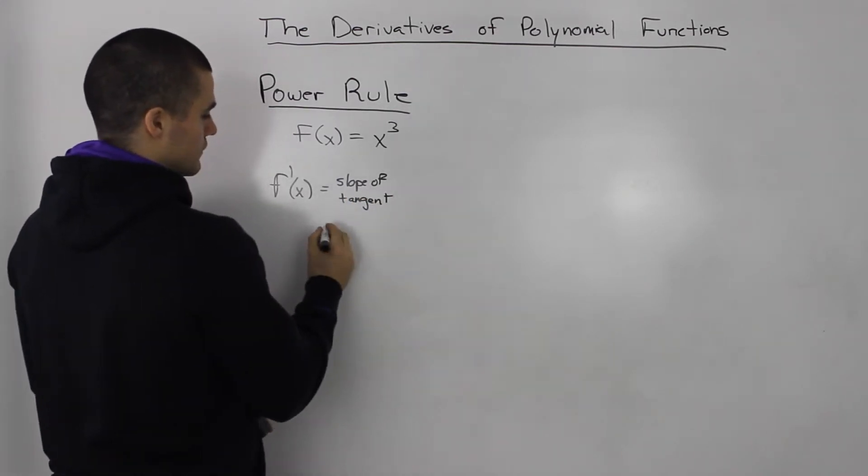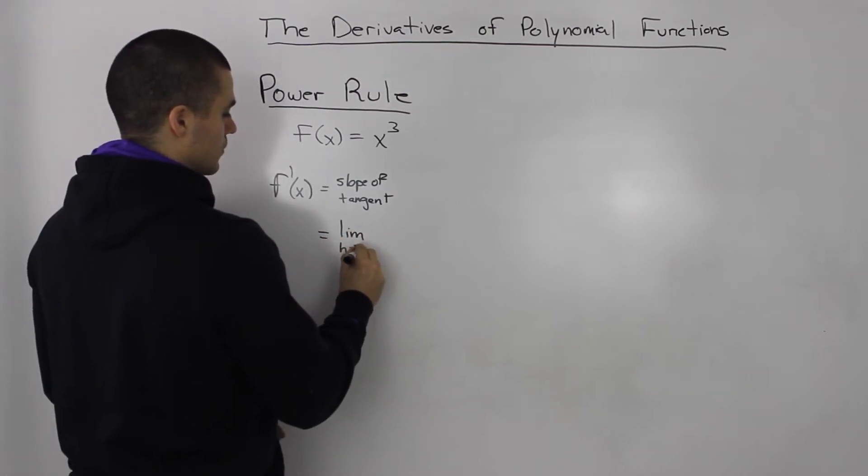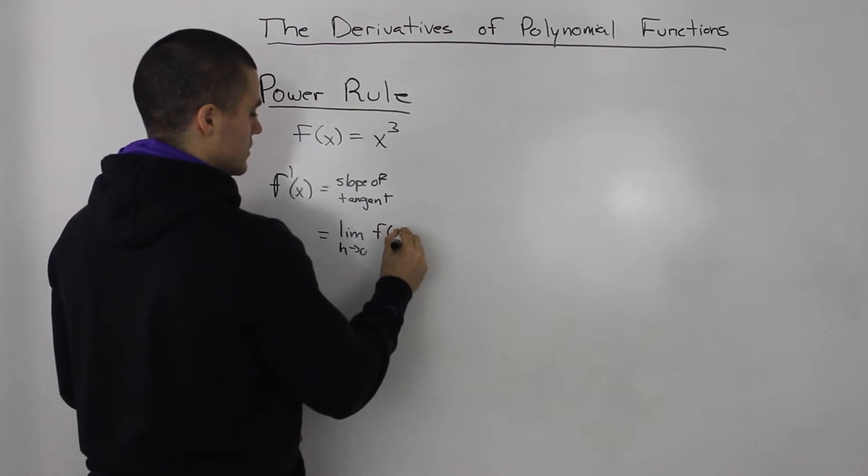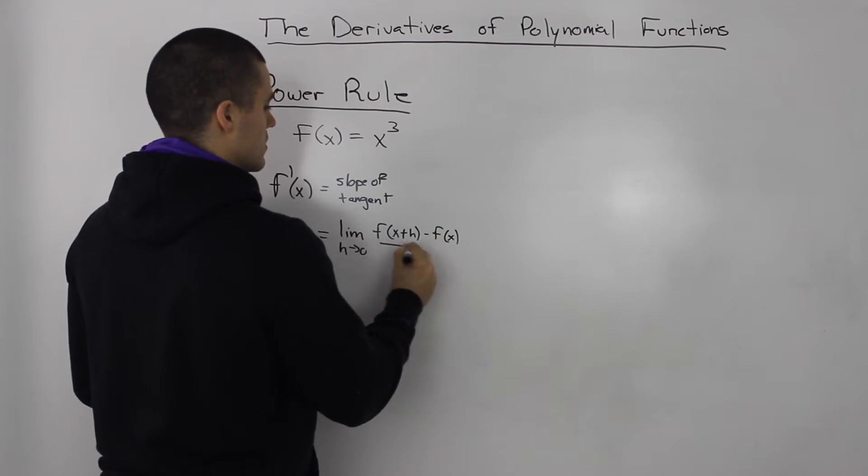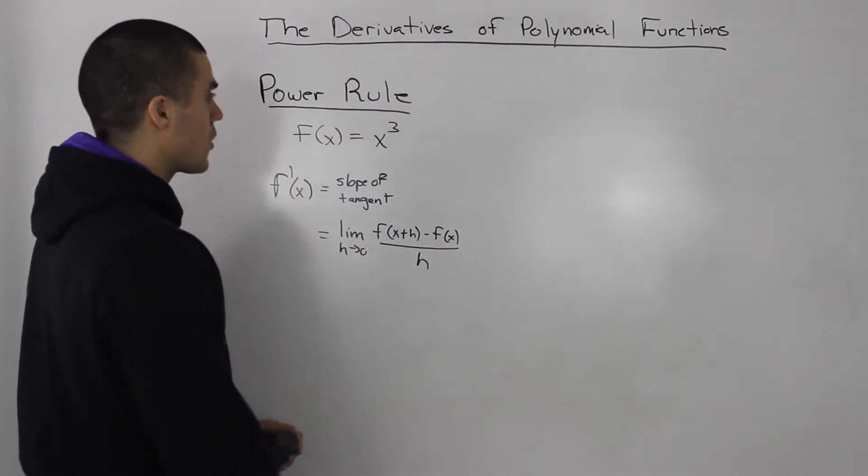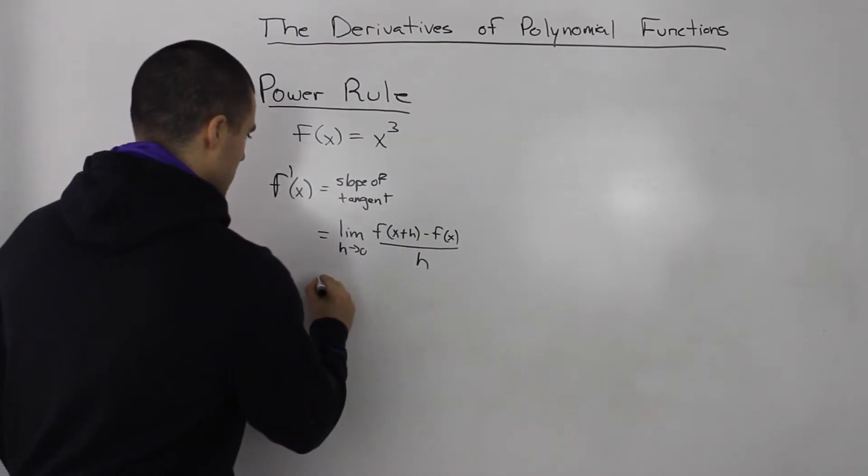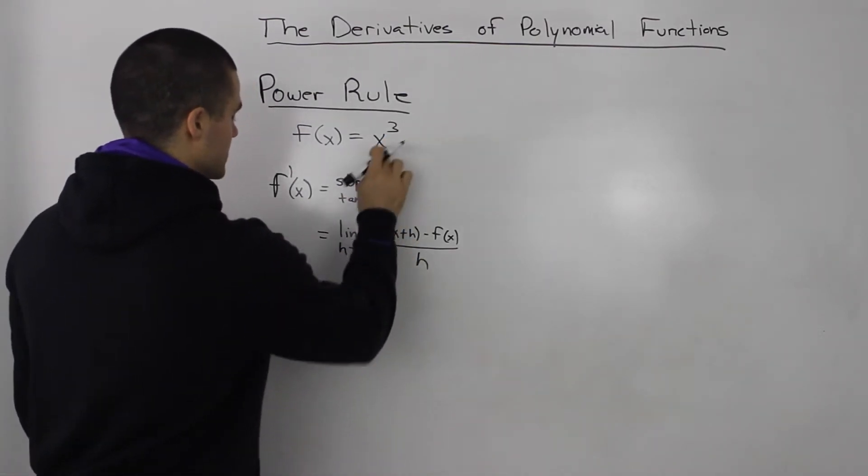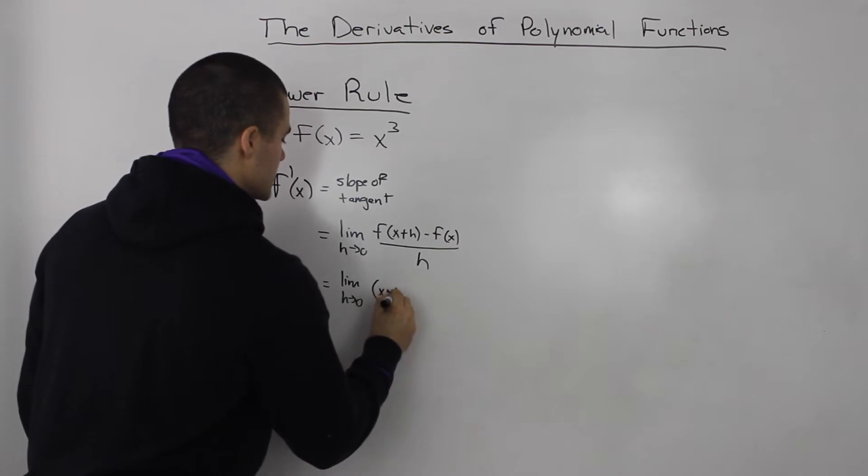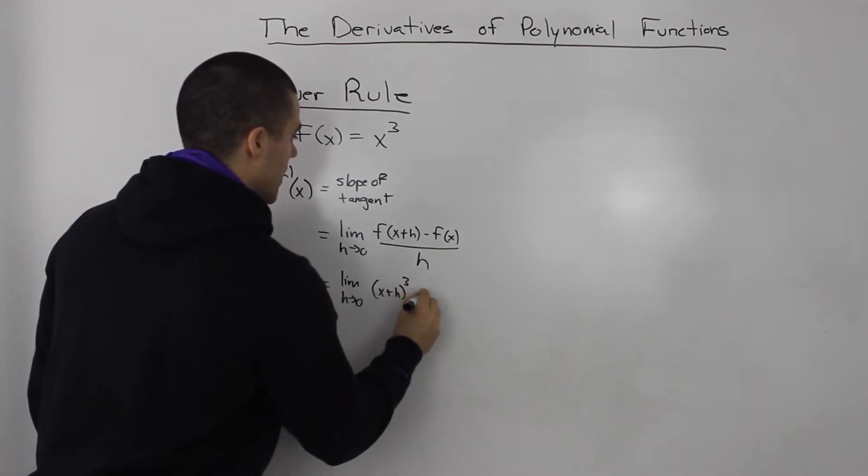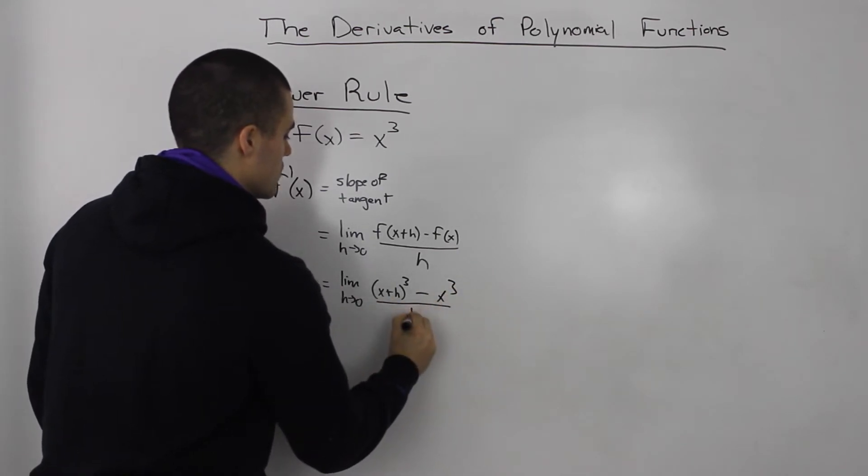You use the definition of a derivative with the difference quotient being part of that definition. So limit as h goes to 0 of f of x plus h minus f of x all over h. Let's solve this question. Plugging in f of x plus h into this, you'll get x plus h to the power of 3 minus f of x which is just x cubed, all over h.